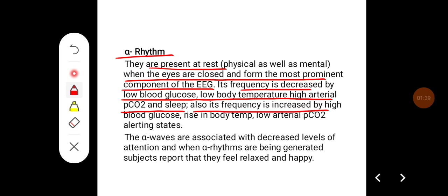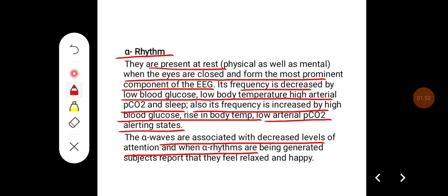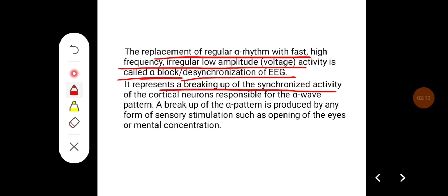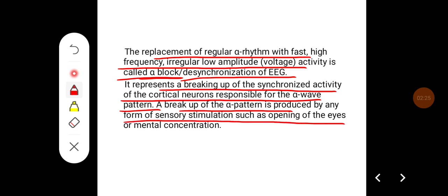Alpha frequency is increased by high blood glucose, rise in body temperature, low arterial PCO2, and alerting states. Alpha waves are associated with decreased levels of attention, and when alpha rhythm is being generated, subjects report that they feel relaxed and happy. The replacement of regular alpha rhythm with fast, high-frequency, irregular low-amplitude voltage activity is called alpha block or desynchronization of the EEG, representing a breaking up of the synchronized activity of cortical neurons responsible for the alpha wave pattern. This breakup is produced by any form of sensory stimulation such as opening of the eyes or mental concentration.